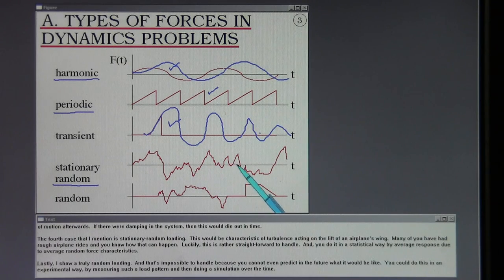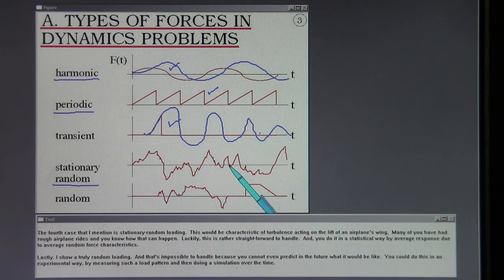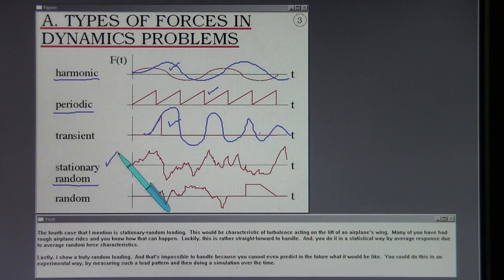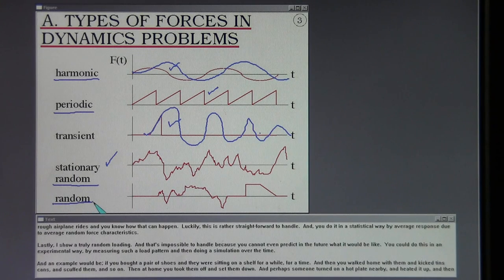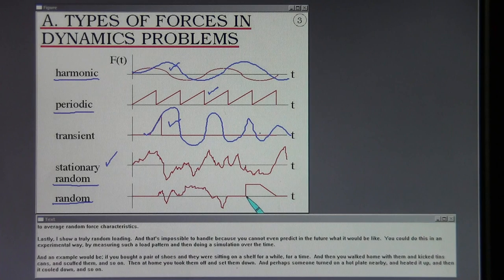The fourth case is stationary random loading. This would be characteristic of turbulence acting on the lift of an airplane's wing. Many of you have had rough airplane rides, and you know how that can happen. Luckily, this is rather straightforward to handle, and you do it in a statistical way by average response due to average random force characteristics.